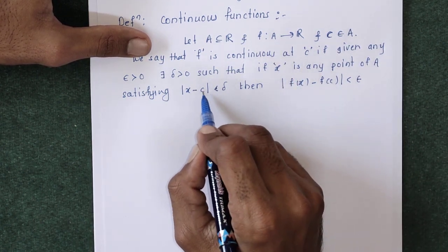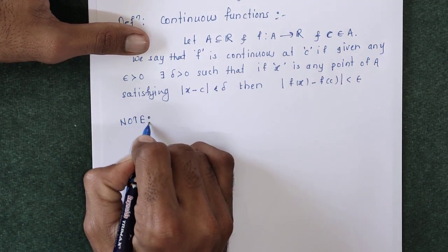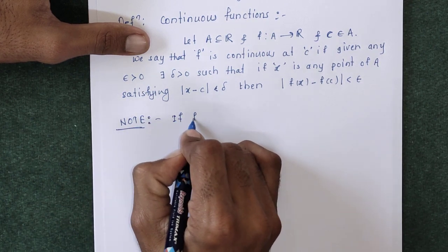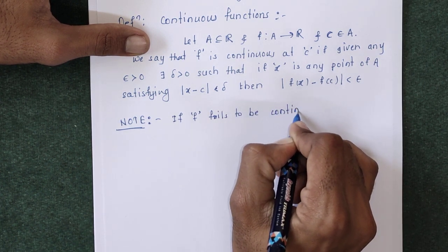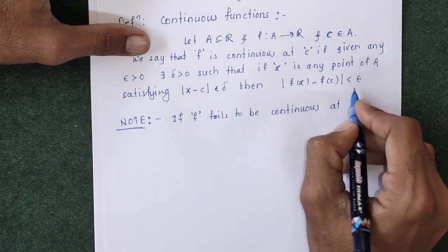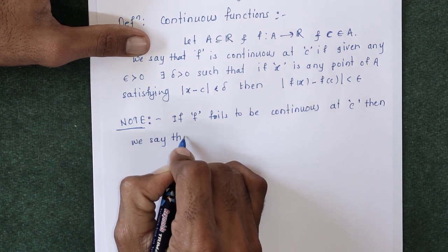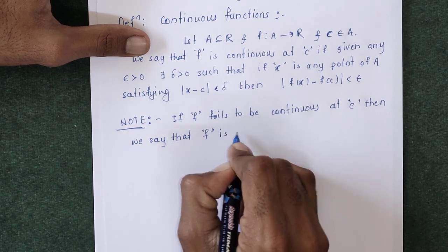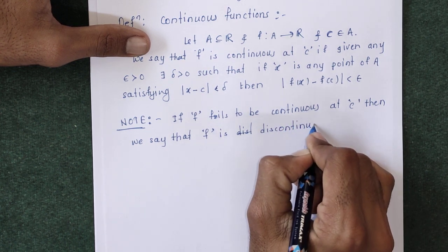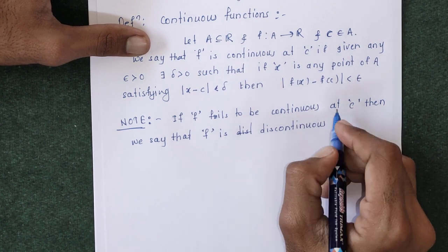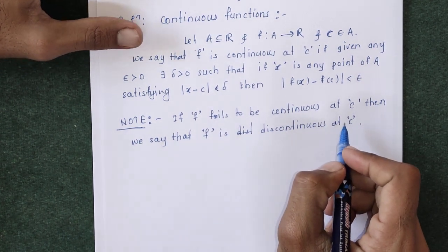If the function fails to be continuous at point C, this function is said to be discontinuous at that point. We will write one note here: if function F fails to be continuous at point C, then we say that function F is discontinuous at that point C.